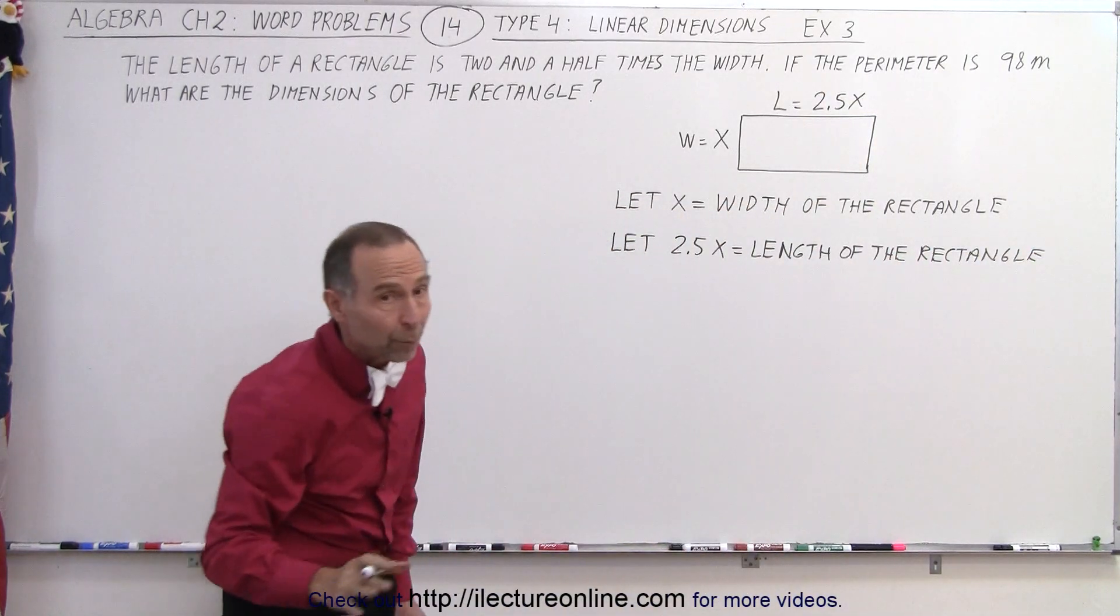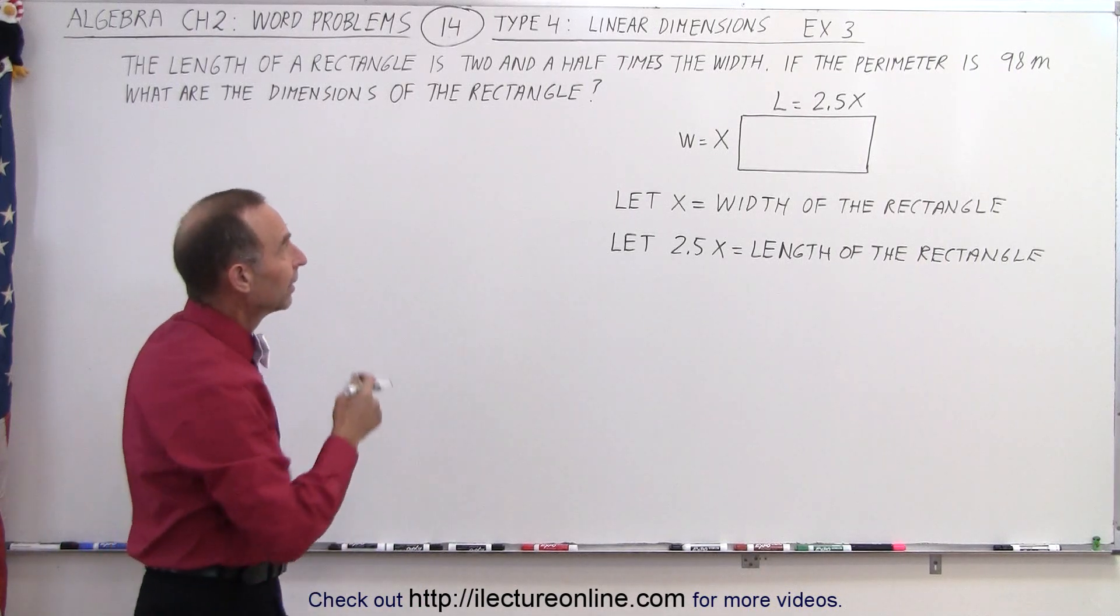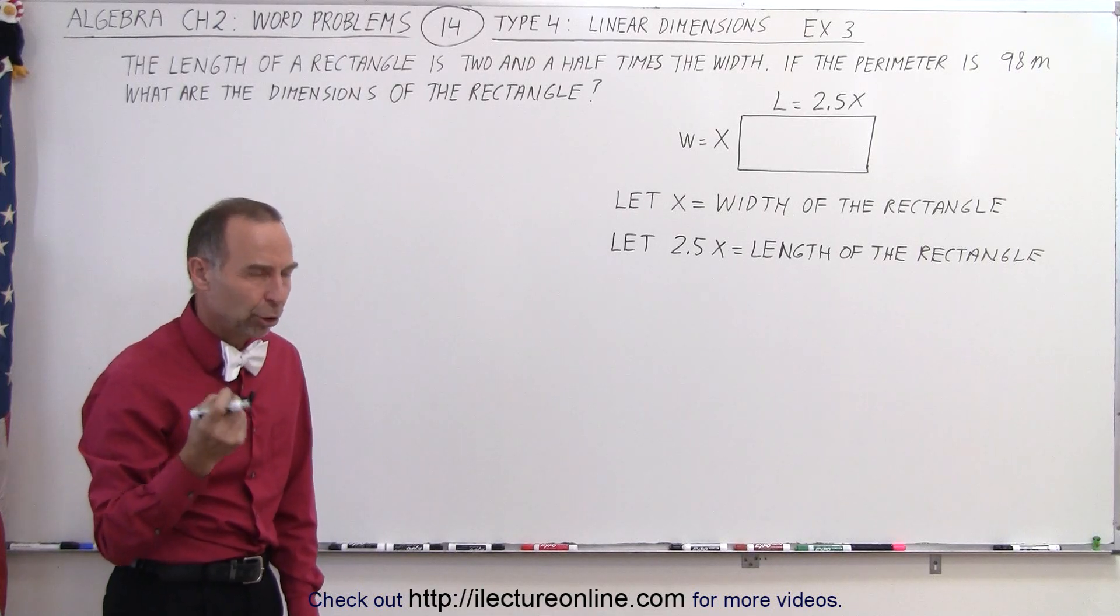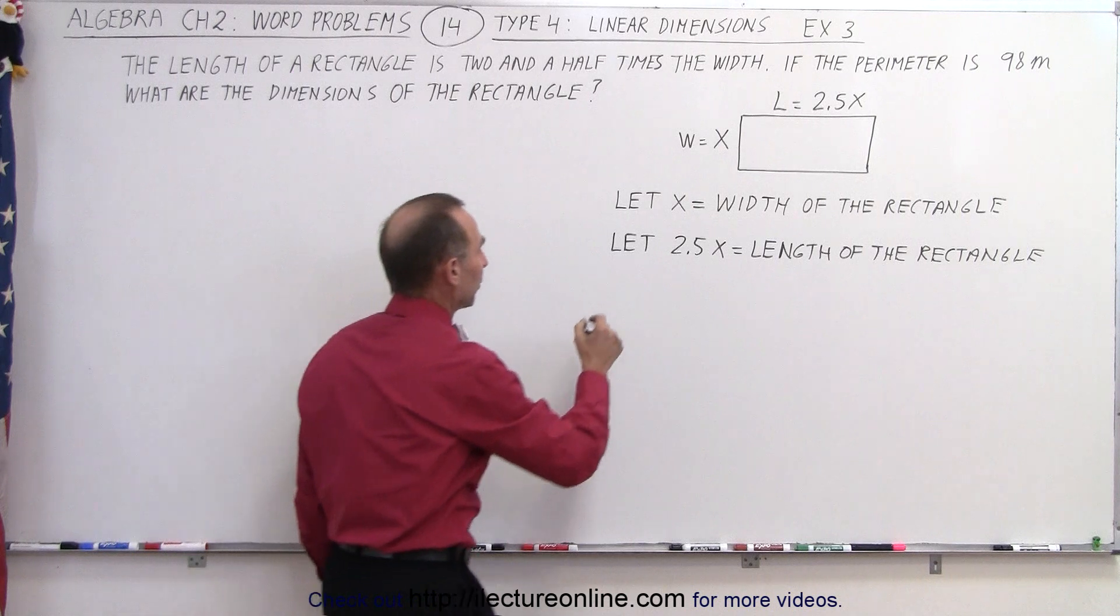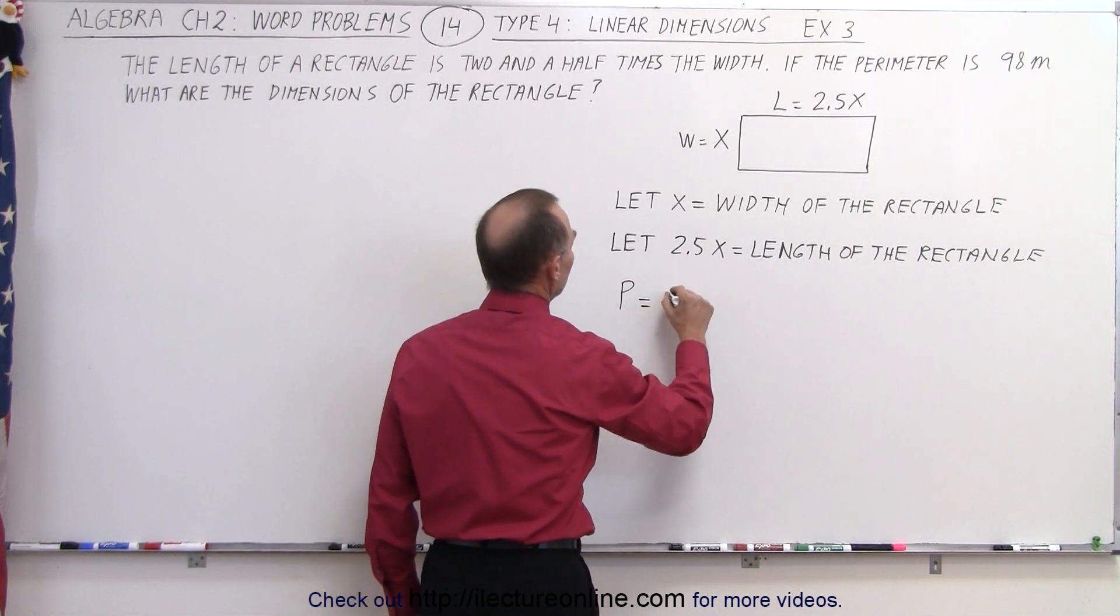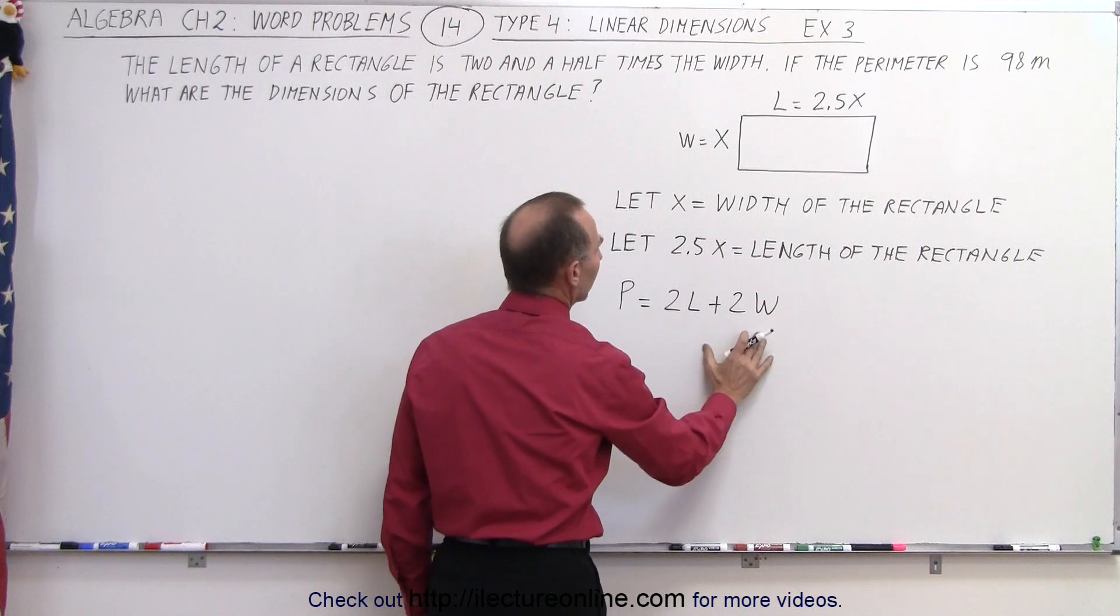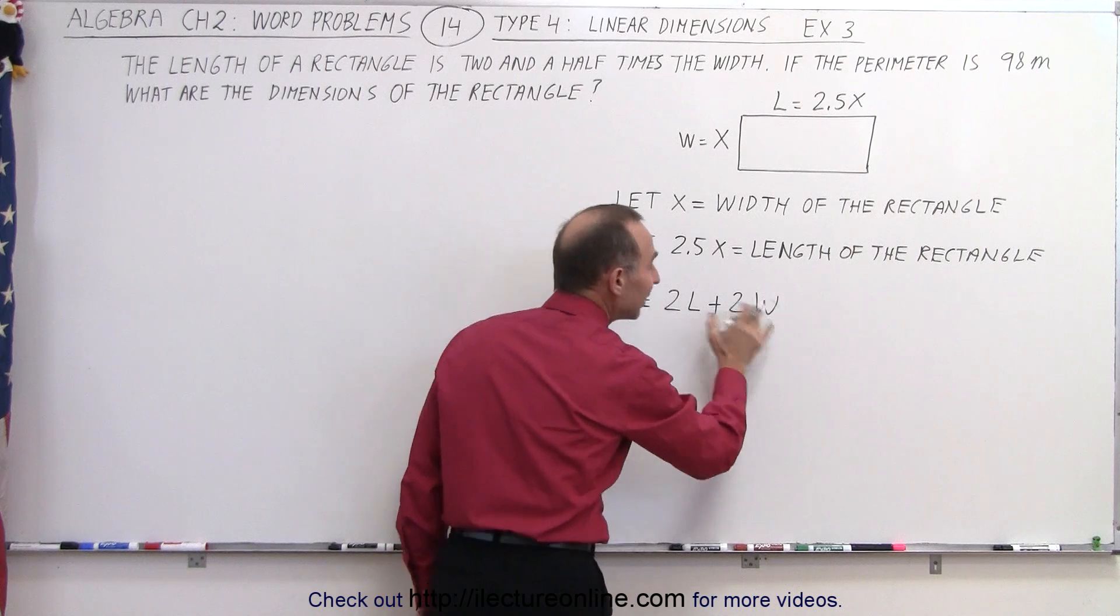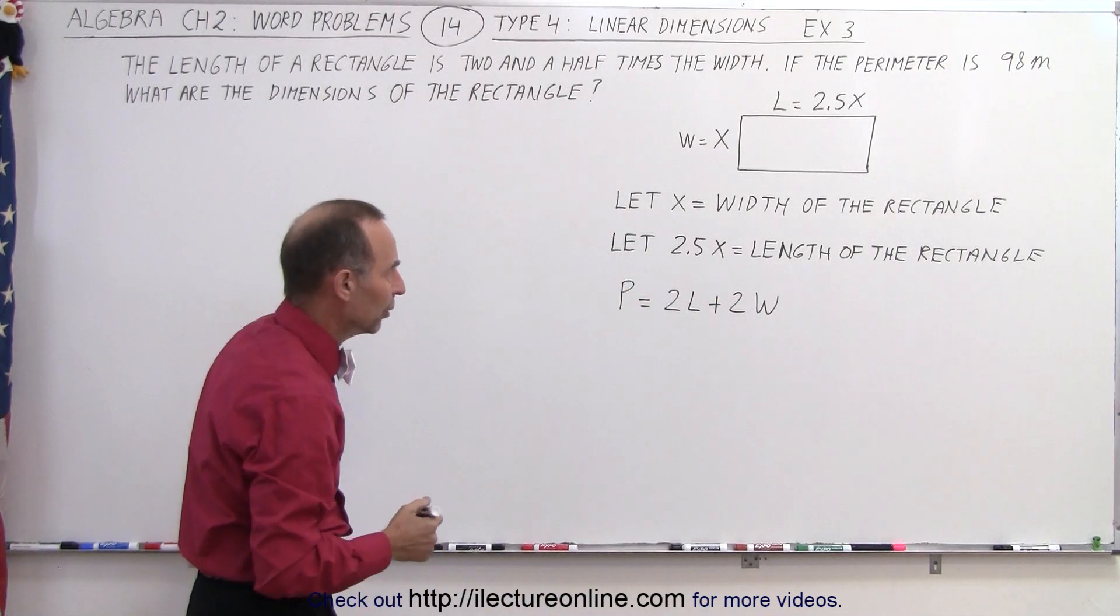There we go. So now we have the length and the width expressed in terms of x. Now they tell us that the perimeter is 98 meters. That's the clue to help us come up with an equation, because we know that the perimeter is equal to two times the length plus two times the width. So there we go. If we now plug in what the perimeter is equal to, what the length is equal to, what the width is equal to, then we have an expression just in the variable x alone.